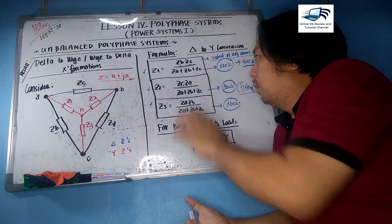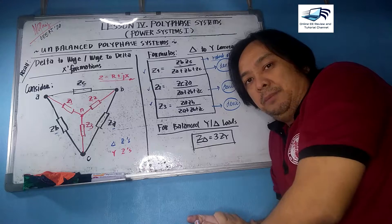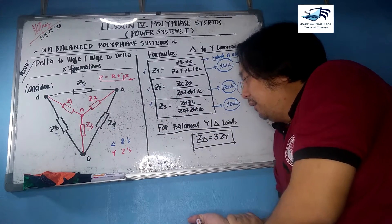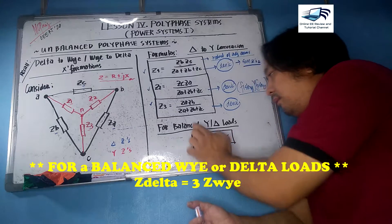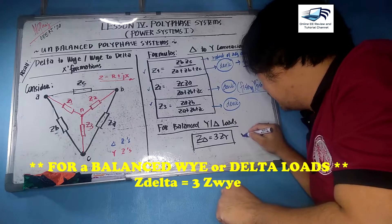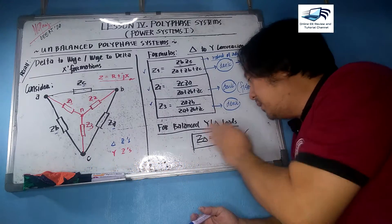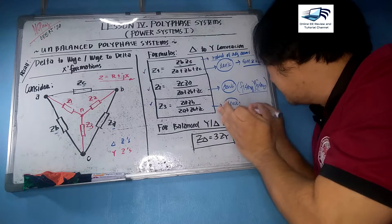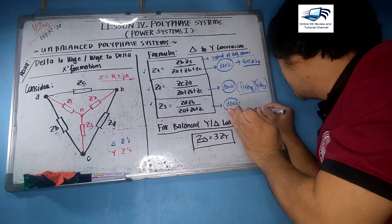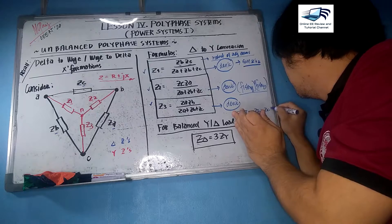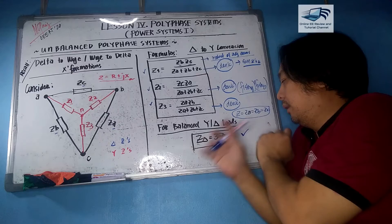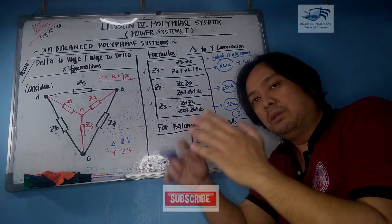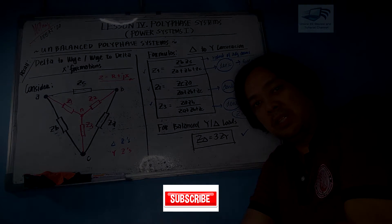That completes the delta-to-Y conversions. As a final note — which we also covered in balanced polyphase systems — for a balanced Y-to-delta load, Z_delta is always equal to three times Z_Y. Note that for a balanced delta load, all impedances on all arms are equal. We will now have the opportunity to solve some problems. See you there, stay tuned, and God bless.